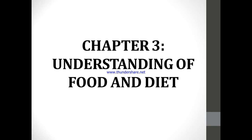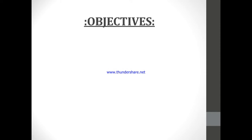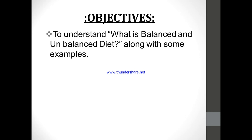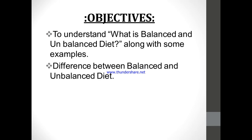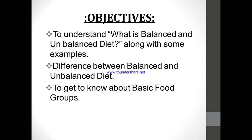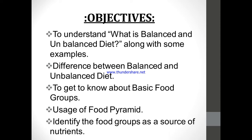Now let's move towards the objectives we are going to cover today. The first objective is to understand what balanced and unbalanced diet are, along with some examples. The second is the difference between balanced and unbalanced diet. The third is what are the basic food groups. And then we will cover the food pyramid and the nutrient sources of those food groups according to the food pyramid.